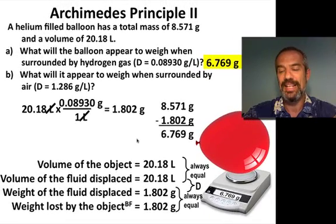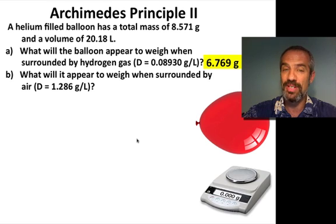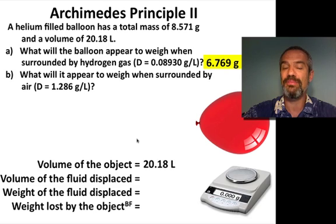Okay, now let's compare that to part B. What will it appear to weigh when surrounded by air? And, air is a much more dense fluid. Again, the table, again we fill it out with 20.18 liters, the given volume.